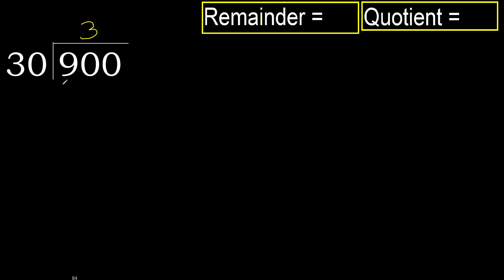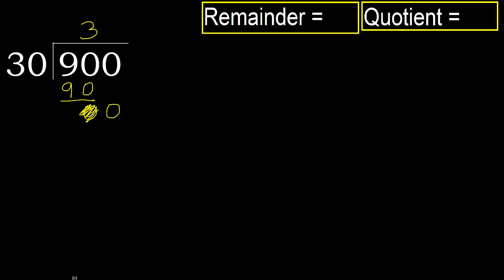30 multiplied by 3 is 90, which is not greater. Subtract: 90 minus 90 equals 0. Next, bring down 0.